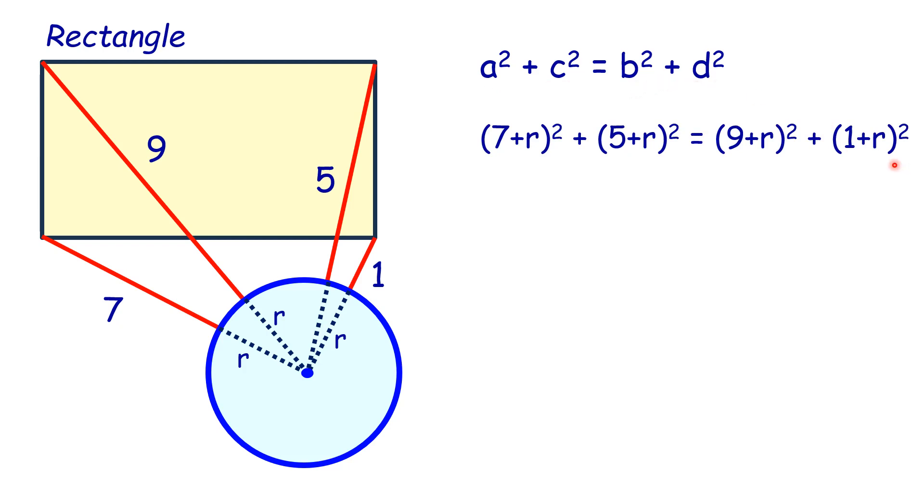Now opening the brackets, we get the left-hand side and right-hand side. To solve it, we will cancel out r². There are two r² terms on the left side and two r² terms on the right side, which we cancel.